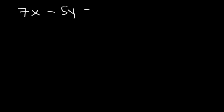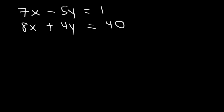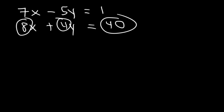Here's another example: 7x minus 5y is equal to 1, and 8x plus 4y is equal to 40. Which equation should we begin with to avoid fractions? Looking at the first equation, 7, 5, and 1 are not multiples of each other, so I won't use that one. Looking at the second equation, 8, 4, and 40 are all multiples of each other, so I want to use the second one.